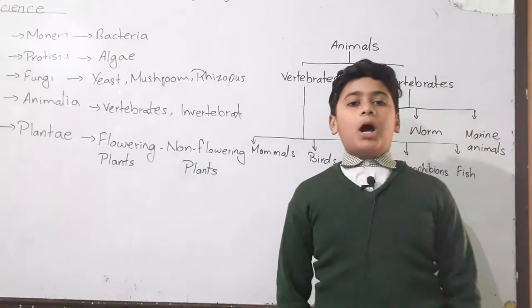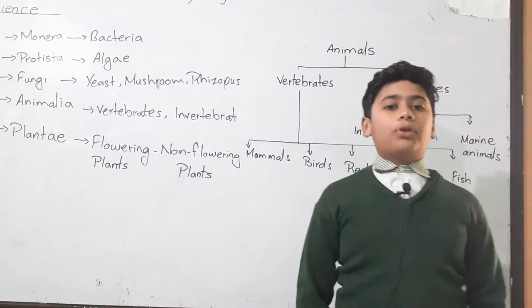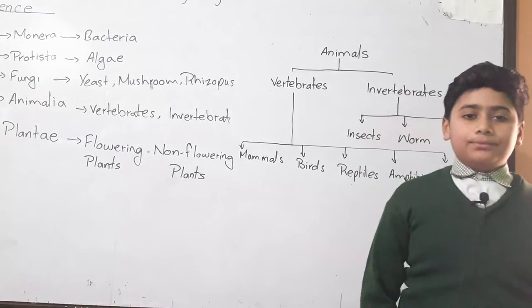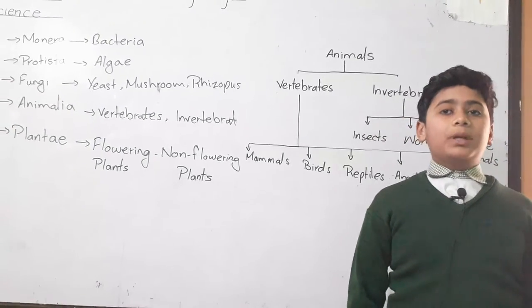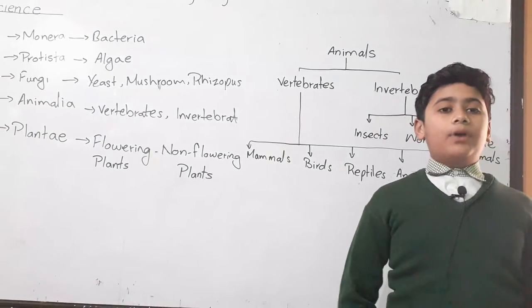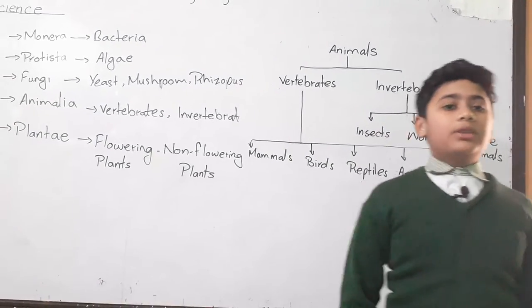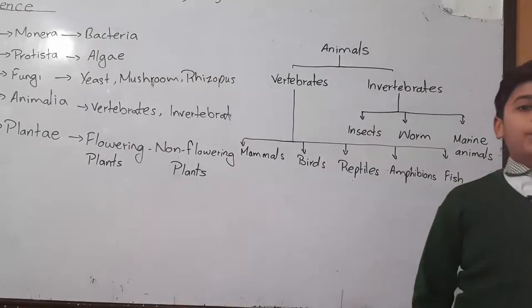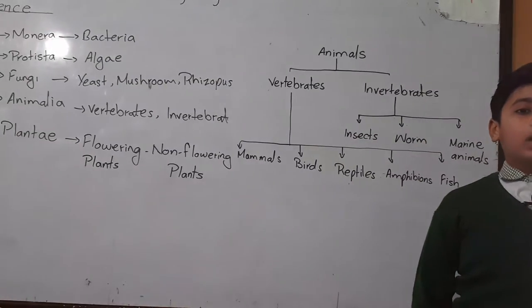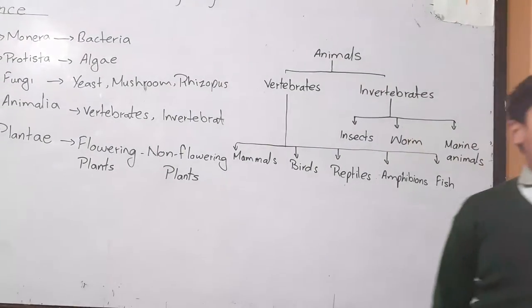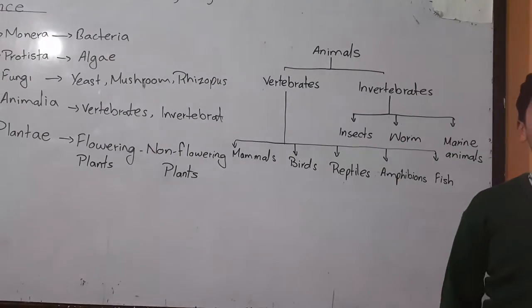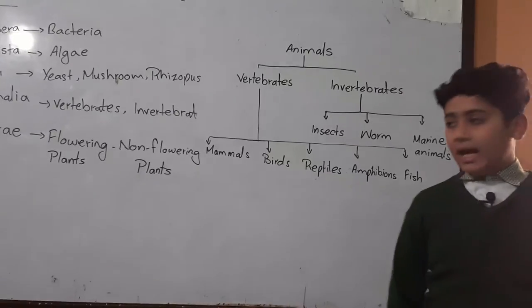Amphibians pass two types of life. They have hard skin. They breathe with the help of lungs and skin. They crawl. They lay eggs on land.